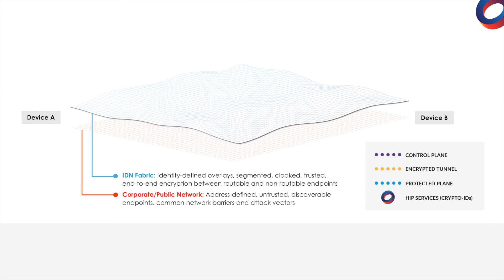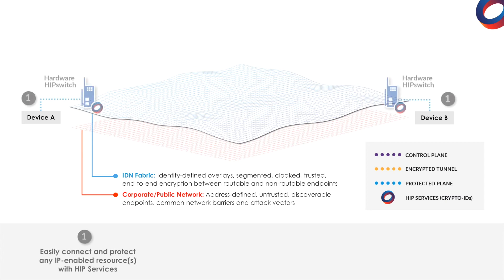Going back to our diagram, let's walk through a very basic example of how encrypted connectivity is established between two HIP services. The power of the IDN fabric is how easy it is to create secure connectivity at scale to meet your business requirements. Step 1: in this example, Device A and B connect via TCP/IP to our physical hardware. For something like our client software, the cryptographic identity would simply be bound to the host device.